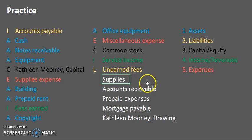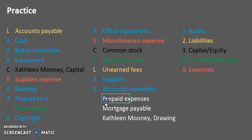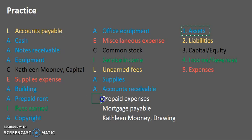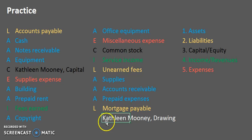Supplies are things we own — nice and simple, that is an asset. Accounts Receivable, like notes receivable discussed earlier, represents money owed to us — another asset. Prepaid Expenses: even though the word 'expense' appears, it is prepaid. If an expense is prepaid, it is not an expense right now — it is an asset. Once that future economic benefit is used up, it becomes an expense. Mortgage Payable: the keyword 'payable' confirms this is a liability.